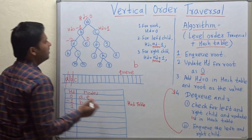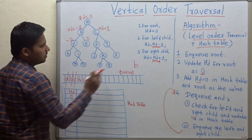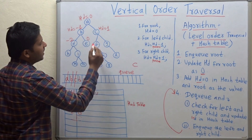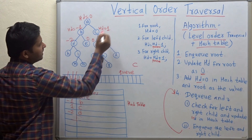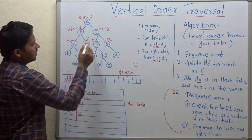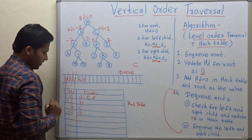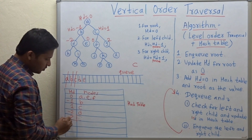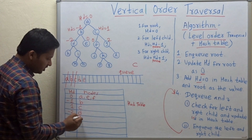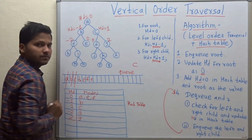Dequeue again — node c. The left child is f and right child is g. So hd for f is 1 minus 1 = 0, and for g is 1 plus 1 = 2. Since 0 is already in the hash table, just add f to that key. For 2, it's a new entry, so add key 2 with node g. Then enqueue f and g.